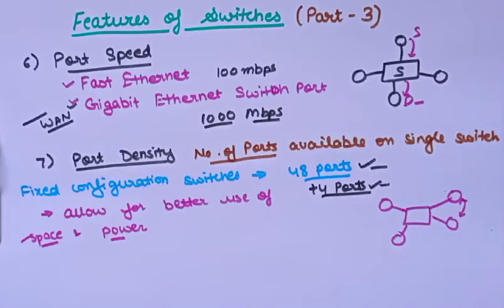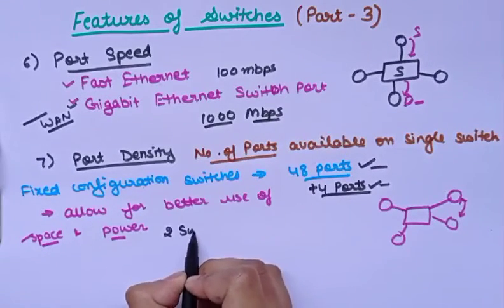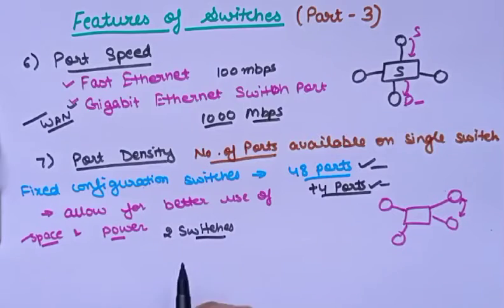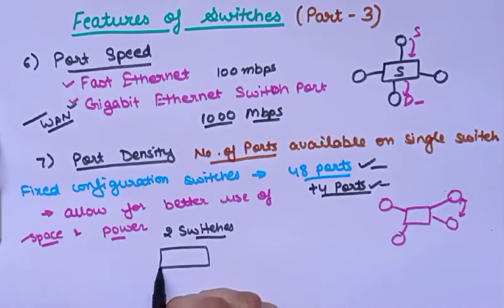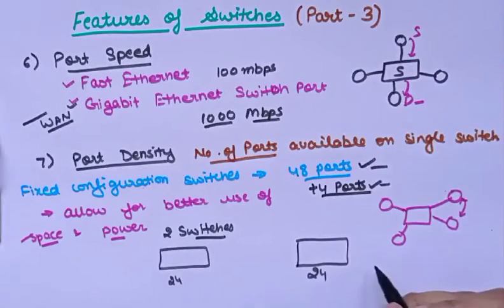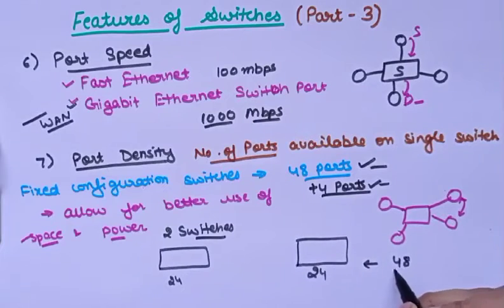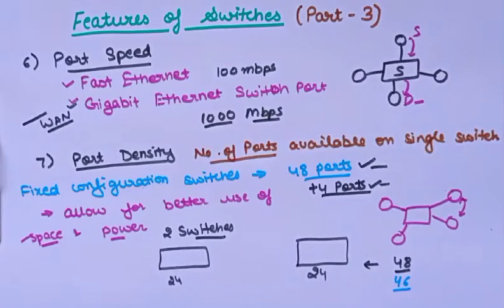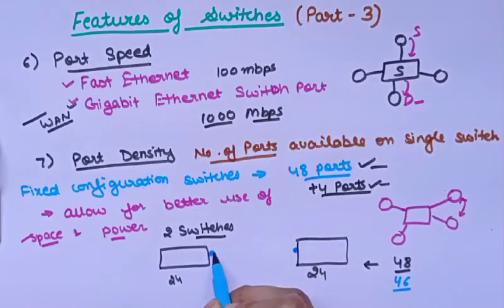Here we are using two switches, each with 24 ports. This switch has 24 ports and this switch has 24 ports, so together we have 48 ports. But we can only use 46 ports, because one port on each switch is used for the inter-switch connection.